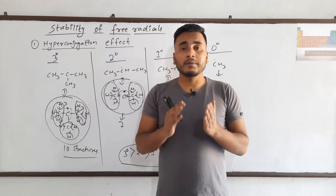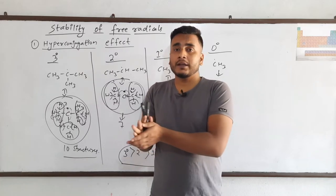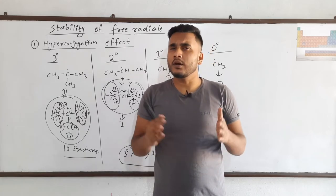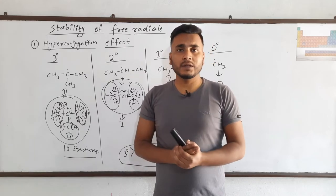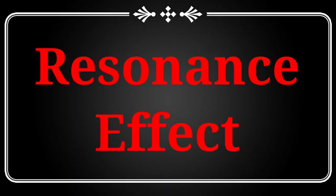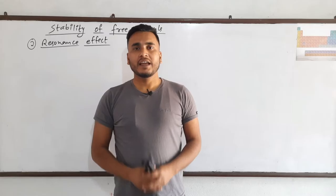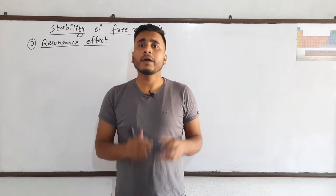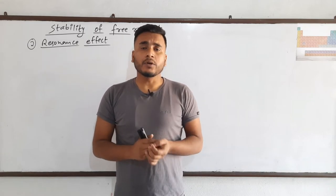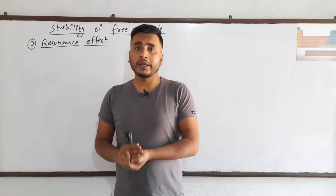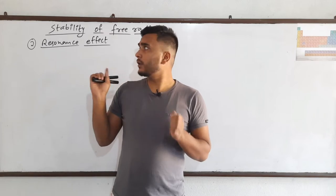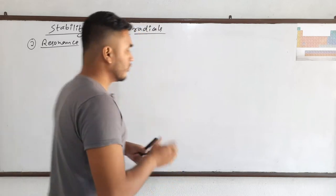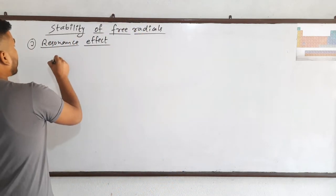Now let's see another type of free radicals — allylic and benzylic — and compare which one of them is more stable. Resonance effect helps us to compare the stability of allylic and benzylic free radicals, because they have double bonds in them and the electron on the free radical gets delocalized because of that double bond. First let's see for the allylic one.